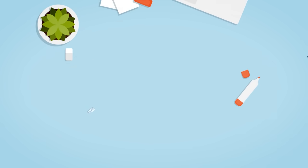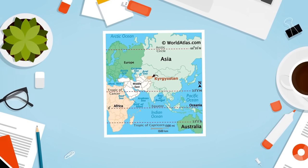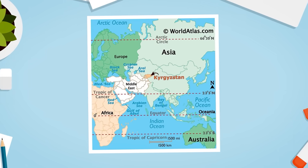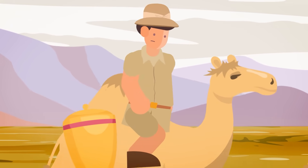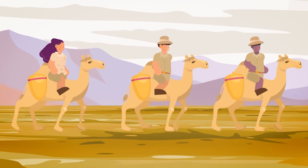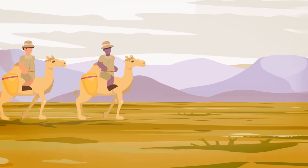However, researchers recently discovered that the bacteria actually originated in Central Asia in what is now Kyrgyzstan. The team believes that they have pinpointed the origin of the bacteria that started the bubonic plague not just to the country but to a specific set of villages.